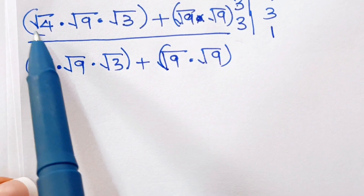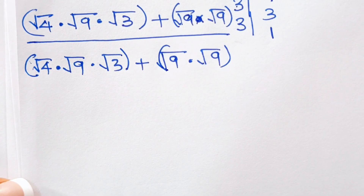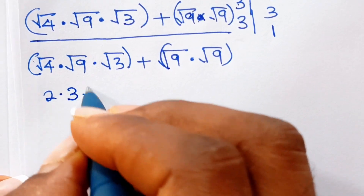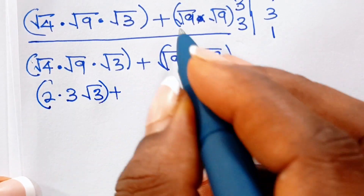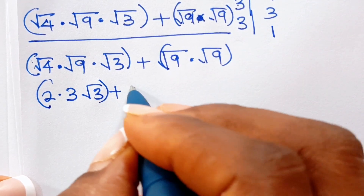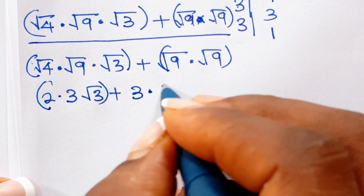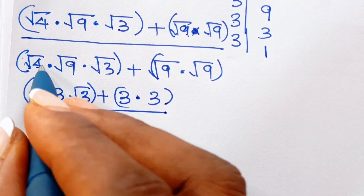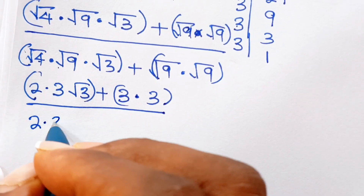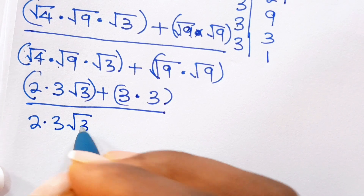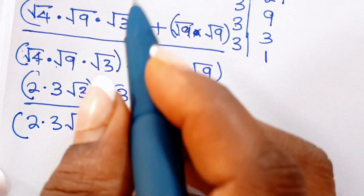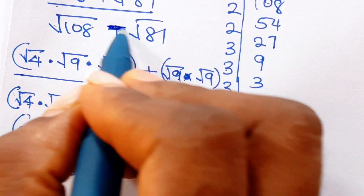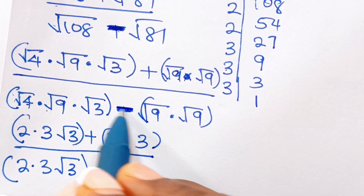Now, we know that root 4 is the same thing as 2. So we have 2 multiplied by root 9, which is the same thing as 3, giving us root 3. Plus, in this place we have root 9, which gives us what? 3 multiplied by root 9, which also gives us 3. Sorry — this is minus; the denominator is minus and not plus here.